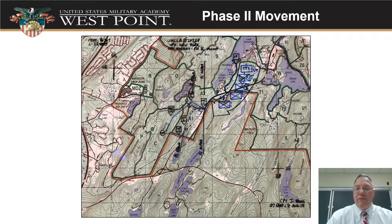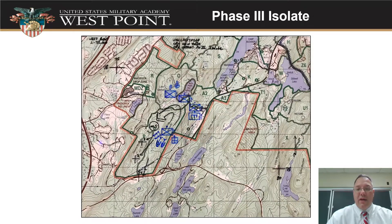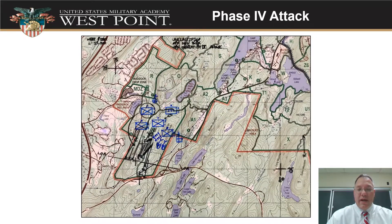Here's an example. If we broke them out by phase, this would be our phase two movement — we can see friendly troops coming down in the upper right showing where they're all laid out. Then we have another overlay showing phase three isolation, with where units will end up as that portion of the mission unfolds. Then phase four, the actual attack on the objective, shows unit icons, our key weapon systems, and the tactical tasks happening during this portion of the mission.